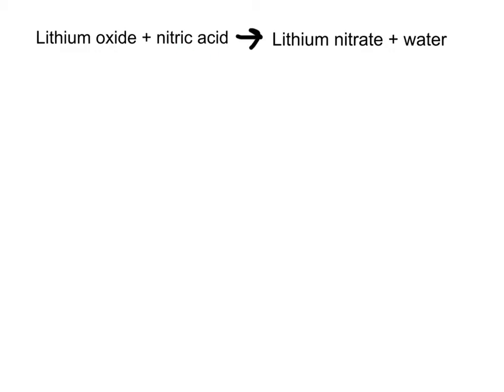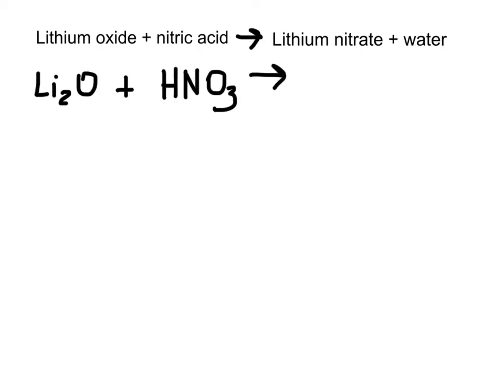Let's write out the symbols. Lithium oxide: lithium is 1+ and oxide is 2−, so it ends up being Li2O to balance that. We then have nitric acid, which is HNO3. That forms lithium nitrate — nitrate is a 1− ion, so this balances nicely as LiNO3 — and water.